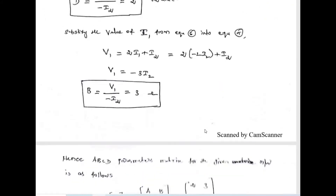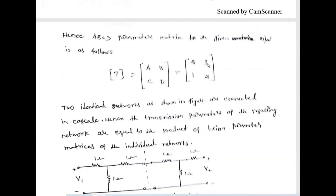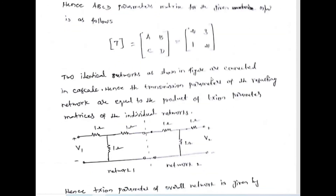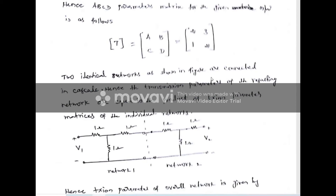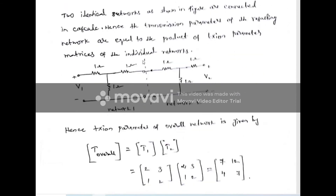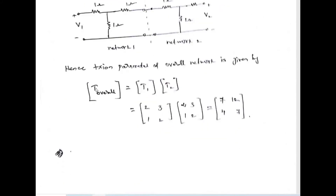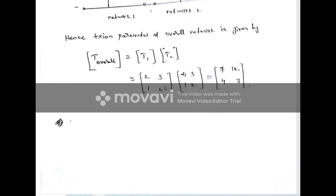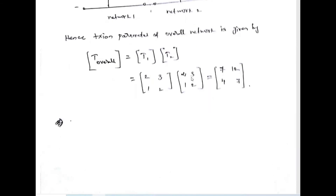From this calculation, the four values A, B, C, D are 2, 3, 1, and 2. Since the question involves two identical networks connected in cascade, the overall transmission parameter is the multiplication of the first ABCD matrix and the second ABCD matrix. Both networks are identical, so we multiply [2, 3; 1, 2] by [2, 3; 1, 2]. This matrix multiplication gives the answer for the overall ABCD parameter of the cascaded network.